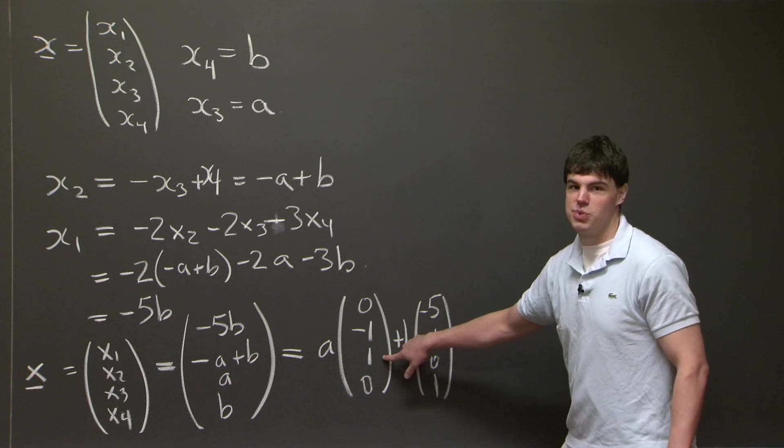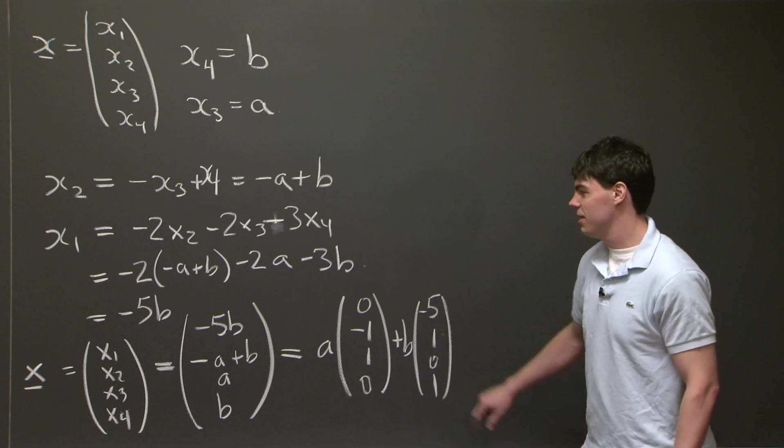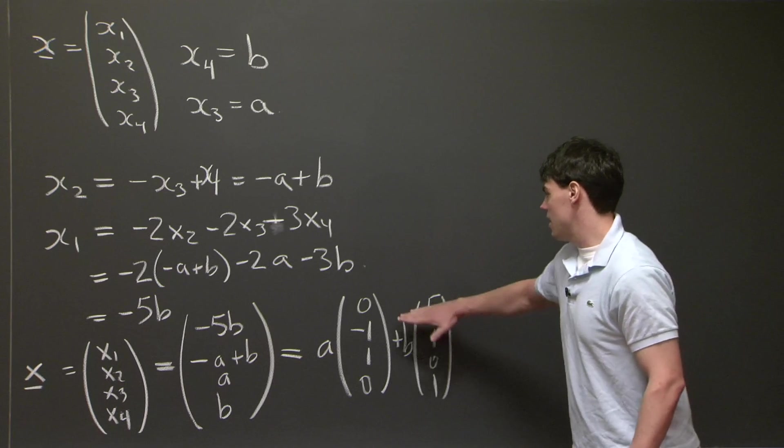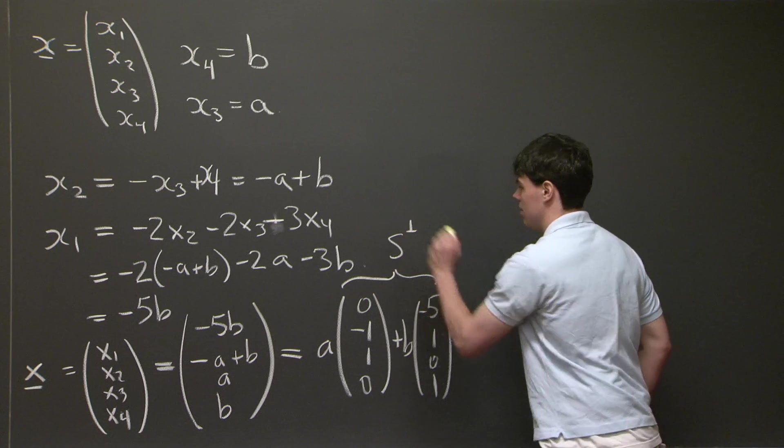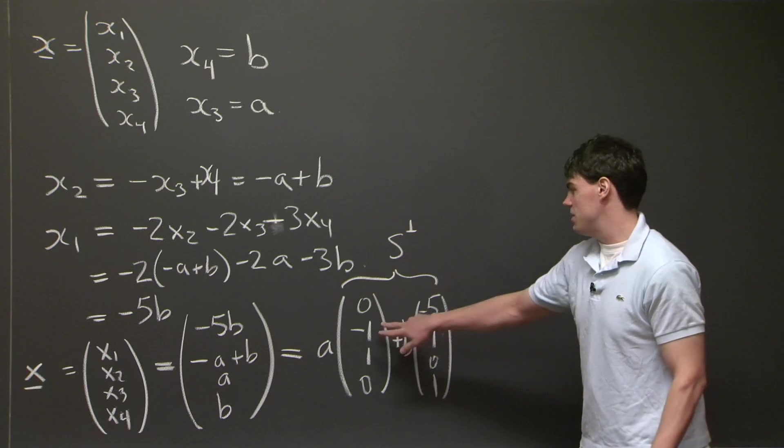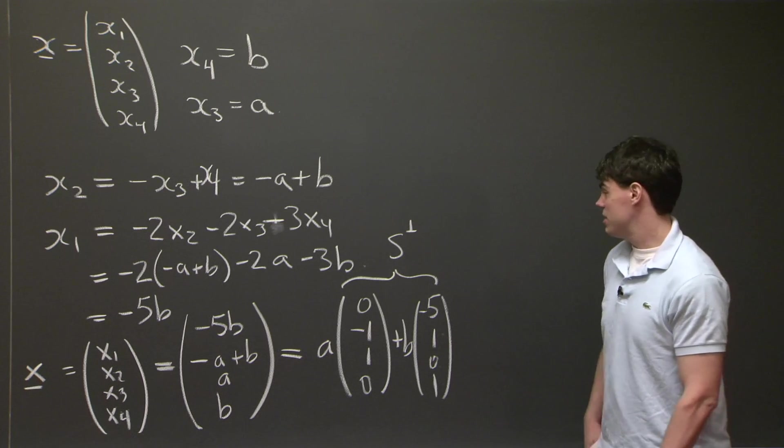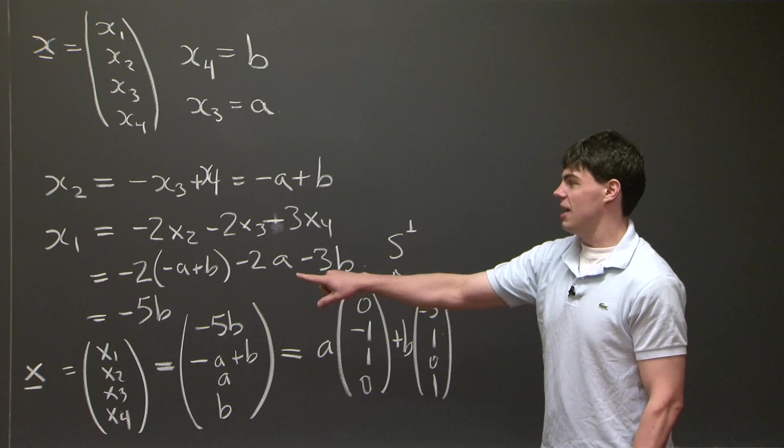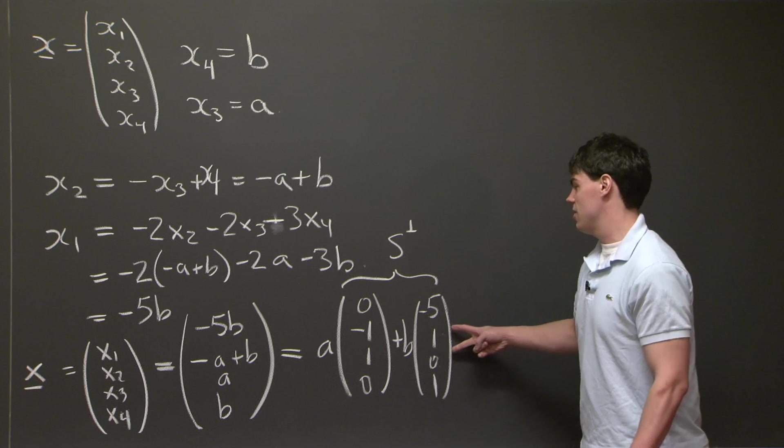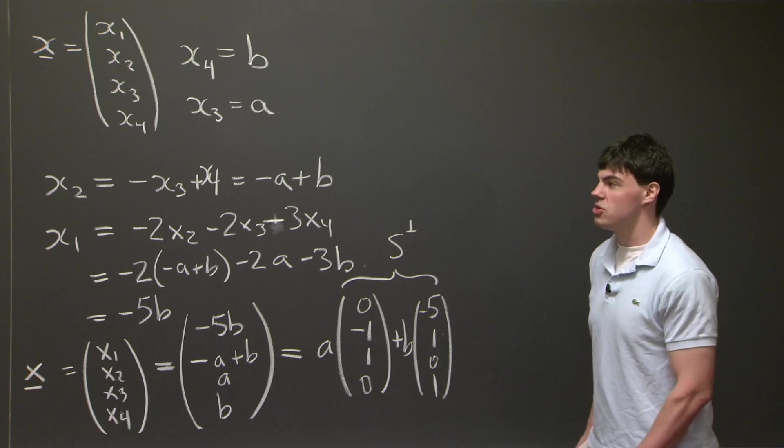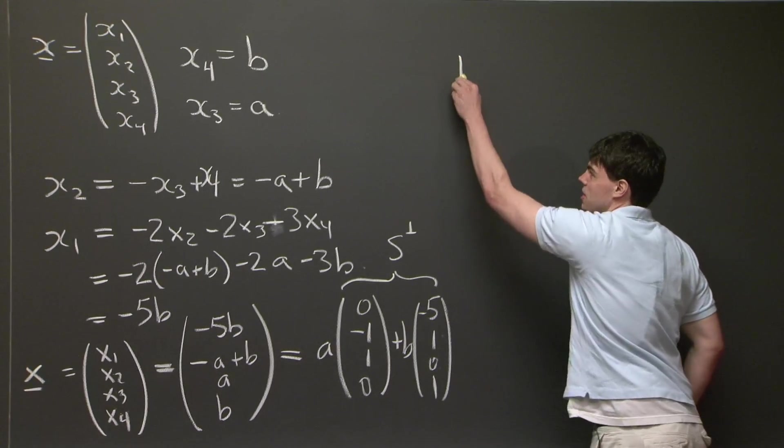OK, so we have successfully achieved a parameterization of the null space of this matrix as some constant a times a vector (0, -1, 1, 0) plus b times a vector (-5, 1, 0, 1). And now we claim that this is the entire space S perp. So S perp is going to be spanned by this vector and this vector. Now notice how if I were to take either of these two vectors in S and dot it with any vector in the null space, by construction it automatically vanishes. OK, so this concludes part 1.